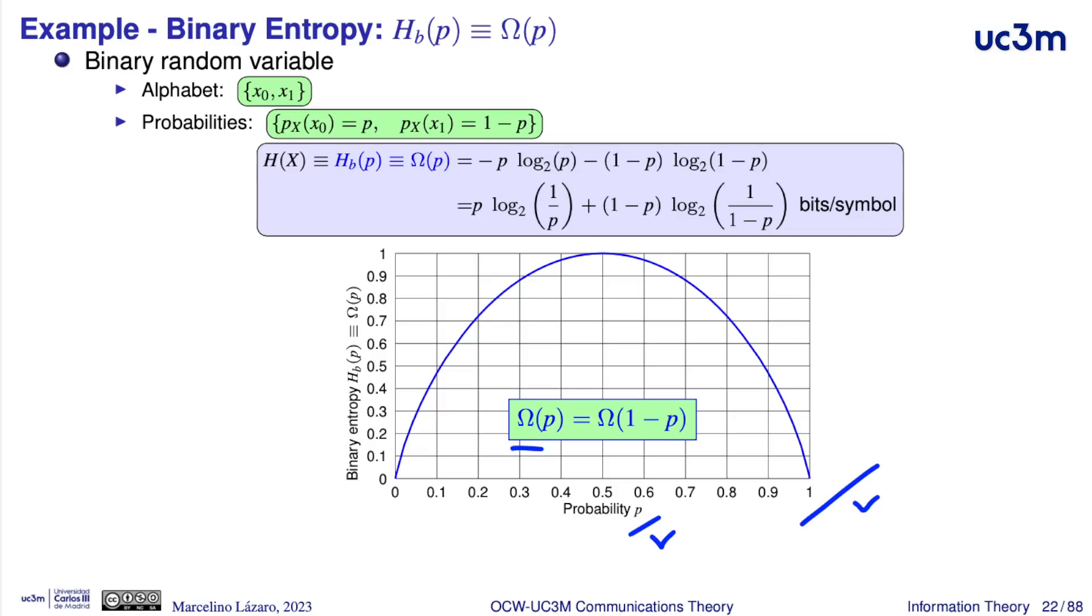the function receives also the name horseshoe because the shape of this function is similar to a horseshoe. In any case, we can see that this function is symmetric. We have the same entropy if the argument is p, then when the argument is 1 minus p,